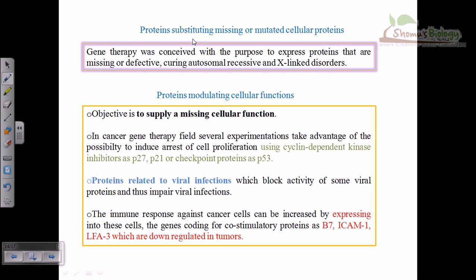We can also use proteins for modulating cellular functions — supplying a missing cellular function. For example, using cyclin-dependent kinase inhibitors like p27, p21, and p53, we can induce arrest of cell proliferation in most cancer diseases.